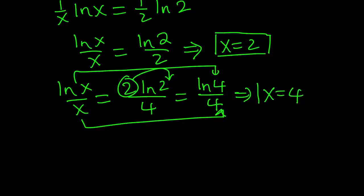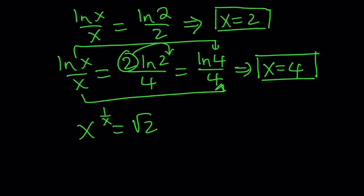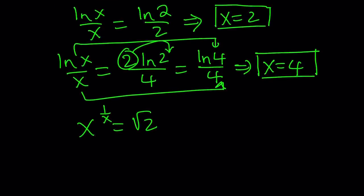Awesome. We got both of the solutions. And we were supposed to have two solutions. x equals two and x equals four. And what was the original problem? It was x to the power of one over x equals square root of two. Let's go ahead and quickly check how the solutions work here. If x is equal to two, you get two to the power of one half. And obviously, two to the power of one half is the same thing as square root of two. No doubt about it. Right?